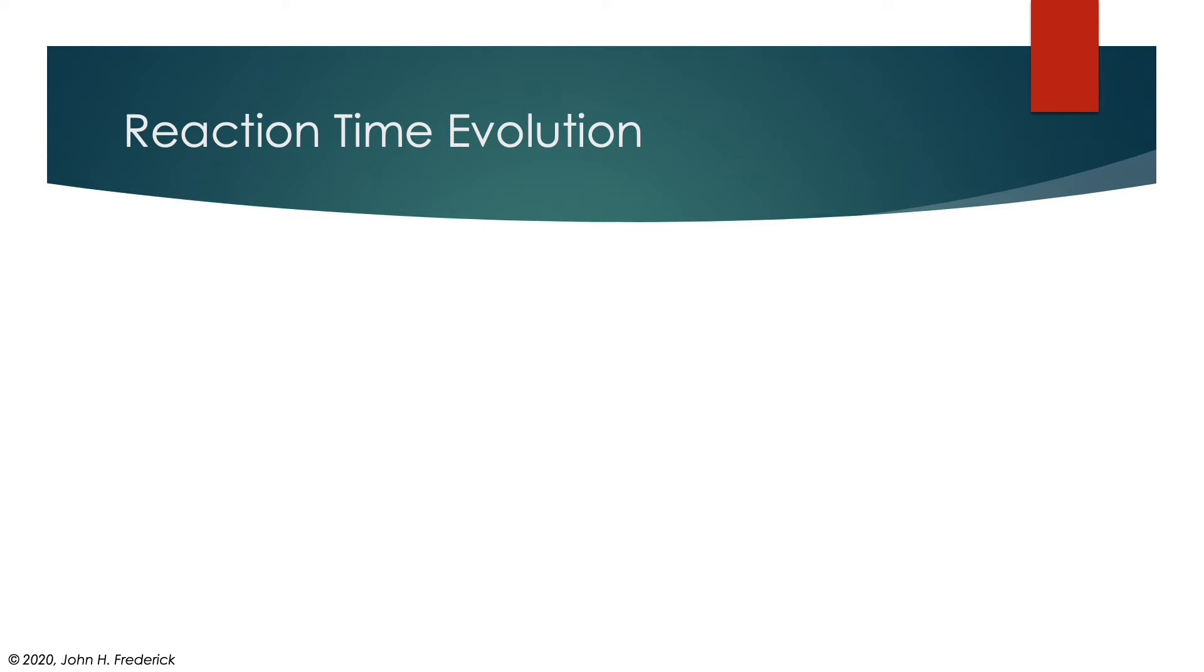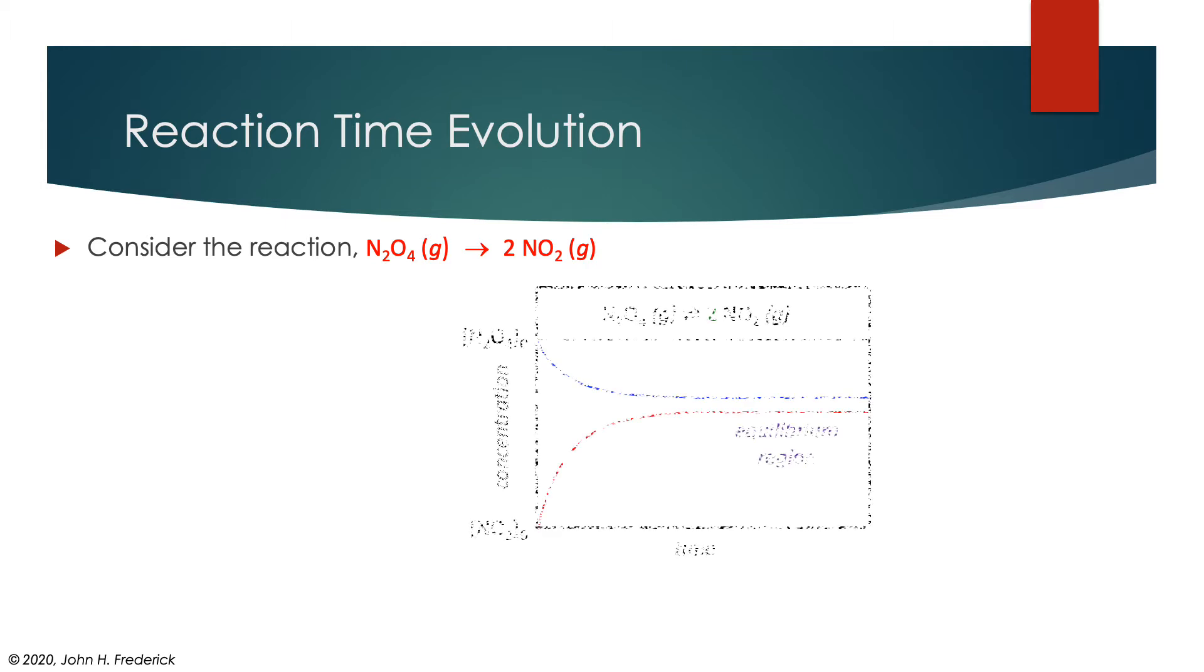So let's first take a look at reaction evolution. I want to consider a very simple reaction, one in which N2O4 goes to form, breaks apart basically, and forms two NO2 molecules. So if we were to draw a picture of how these concentrations change as a function of time, it may look something like this.